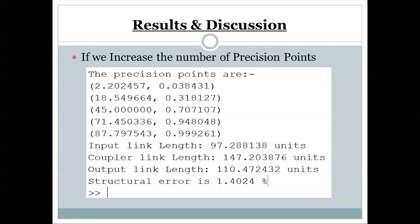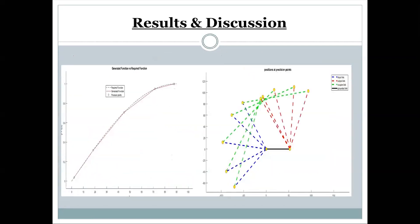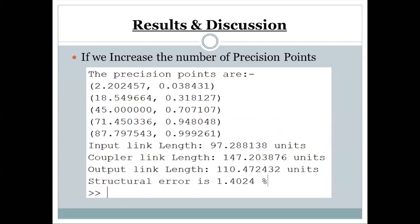I also performed the synthesis for five precision points. The structural error has reduced from 3.8804 to 1.4024. It is only possible to achieve zero structural error if we take an infinite number of precision points, which is impossible in real applications. As you can see, the gap between both graphs has quite drastically reduced as we increase the precision points, and there are five positions where the generated function and required function exactly match. The area between the two curves gives us the structural error of 1.4024.